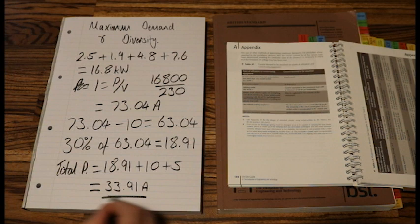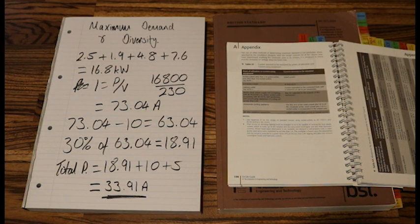And that is the total. So I would then use that for my, if you're doing a cable calculation, that would be my IB, and I would choose a cable that could carry that current, that just under 34 amps. And that is how we work out maximum demand and diversity on a simple cooker circuit.